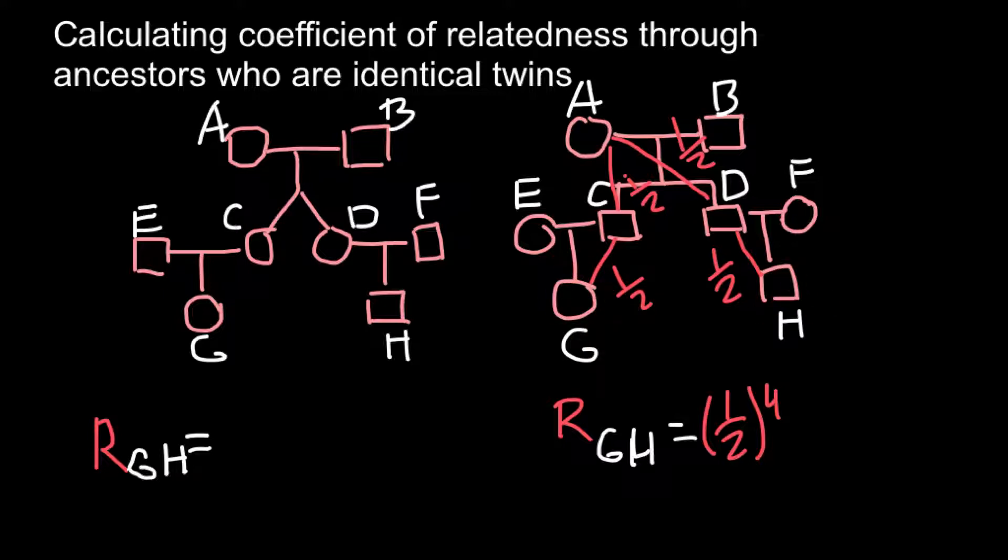These two individuals also have another common ancestor, ancestor B. So we have to put another path here. And this is going to be as follows, and we are going to get the same number. So we have to add these two probabilities, plus 1 half in a power of 4.